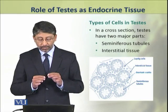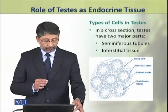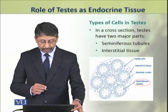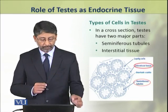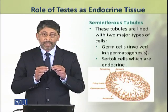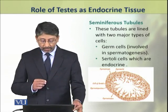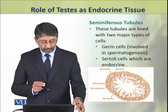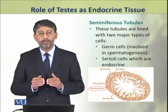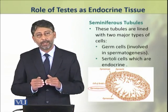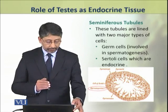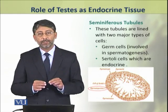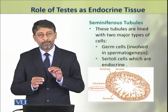In a cross-section, testes have two major parts: the seminiferous tubules and the interstitial tissue. The seminiferous tubules are lined with two major types of cells. One are the germ cells, which are involved in spermatogenesis. The other type of cells are the Sertoli cells, which function as endocrine cells.